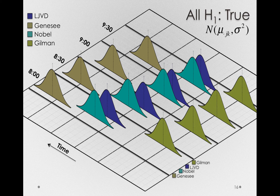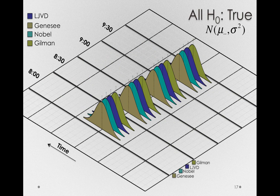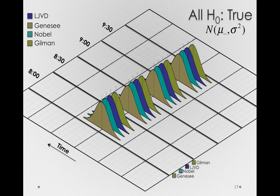This equal variance assumption is true whether or not any of our alternative hypotheses are true or false. Using this diagram, let's look at other possible states of nature. Let's start with all H0 true — every null hypothesis being true: no route effect, no time of day effect, and no interaction. Graphically, that's just having all of our population distributions at the exact same y value.